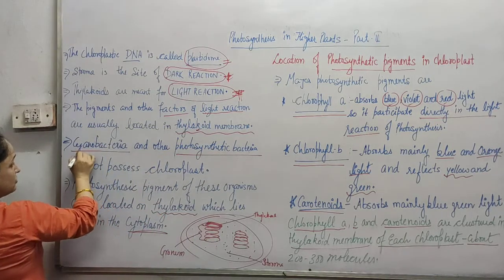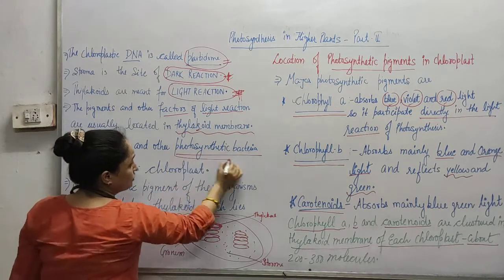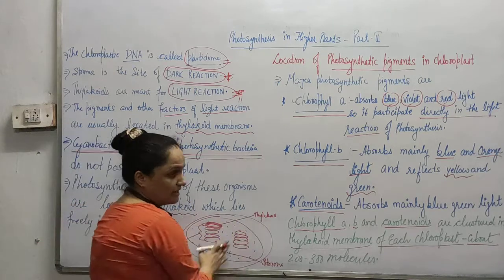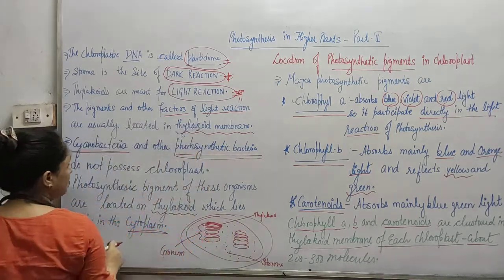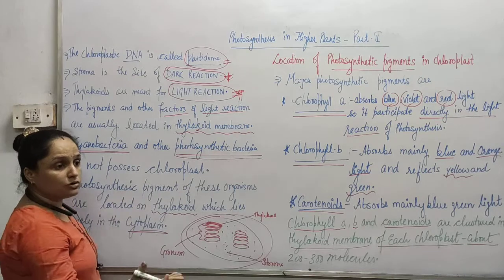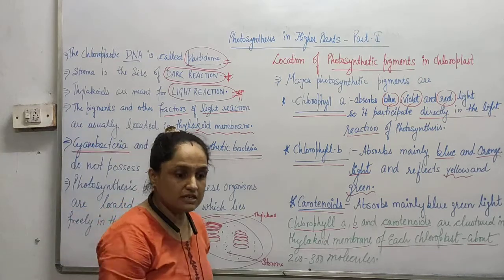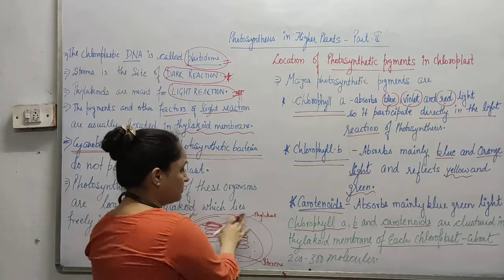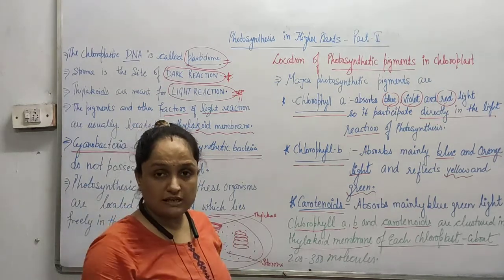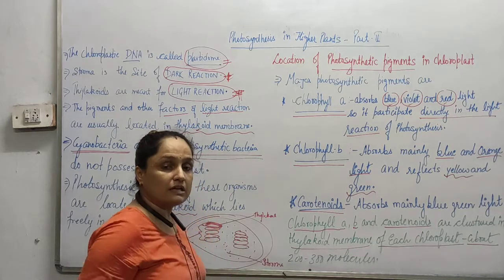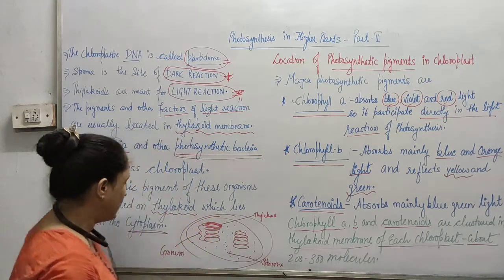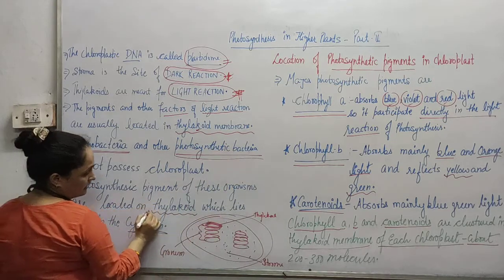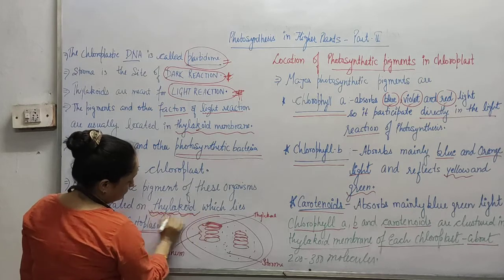Next, when we talk about cyanobacteria and other photosynthetic bacteria, they do not have a structure like the chloroplast. They are still able to perform photosynthesis. The question is: how do they do it? They have thylakoids but they do not have the chloroplast stroma, so their thylakoids are found freely in the cytoplasm. The photosynthetic pigments of these organisms are located in those thylakoids.